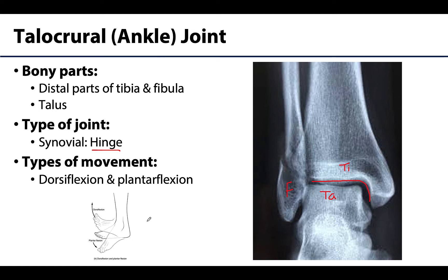An important consideration is that these movements very rarely occur in a vacuum — other joints in this general region are also producing movement simultaneously. The ankle is relatively unstable during plantarflexion but much more stable during dorsiflexion. Standing on your toes you can only do that for so long and you're already wobbly, whereas dorsiflexion is a more powerful, stable movement because of a better fit of the joint surfaces.